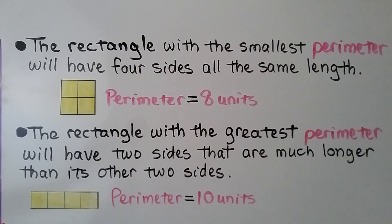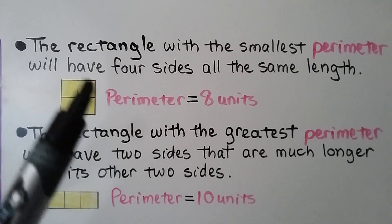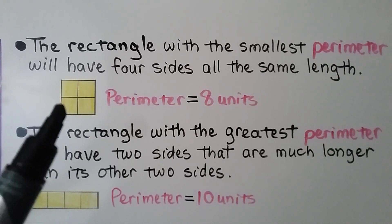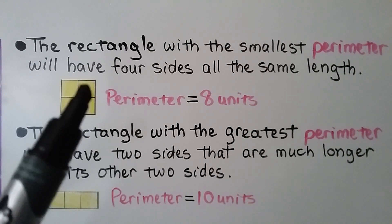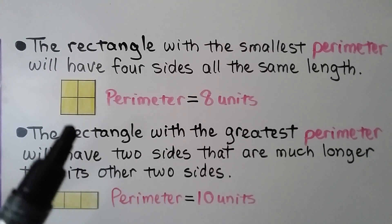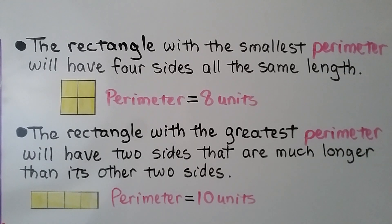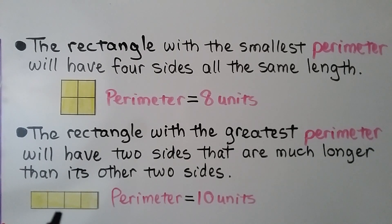The rectangle with the smallest perimeter will have four sides all the same length, and the rectangle with the greatest perimeter will have two sides much longer than its other two sides. Here's a square — which is actually considered a rectangle — with a perimeter of 8 units going around its outside edges. This other one has a perimeter of 10 units, and the one with two long sides has the larger perimeter.